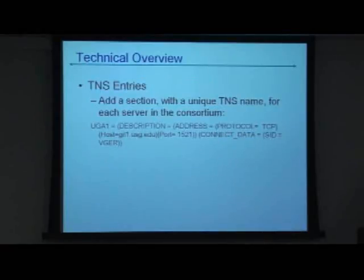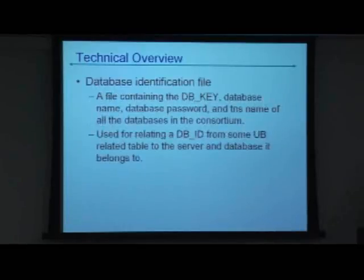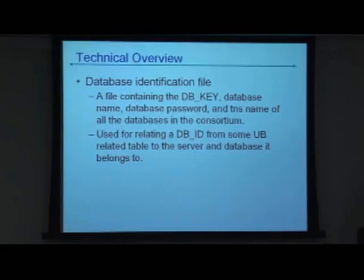That's just a sample TNS entry we put in the TNS names file for the other databases. The DB key, like I say, is something they added for UB. It's a unique identifier for each database in the system, and we use that to relate the DB ID to the UB database.